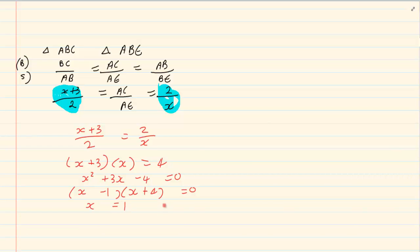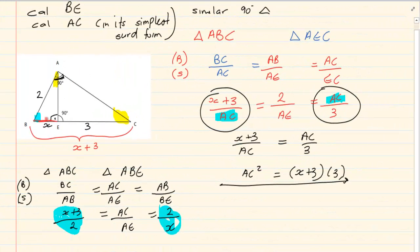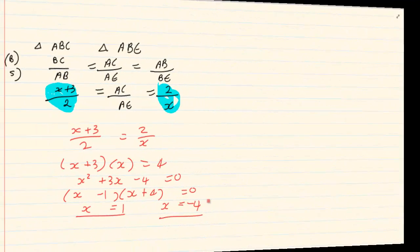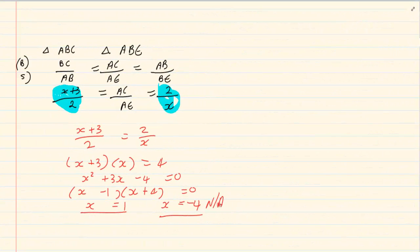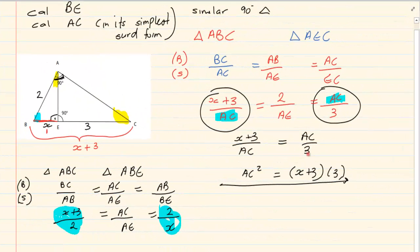So we have X is equal to 1 and X is equal to minus 4. Now if we are working with a length it can never be negative which means that this one is not accepted. BE would have to equal to 1. Once you have that X is equal to 1 let's go back to this equation.